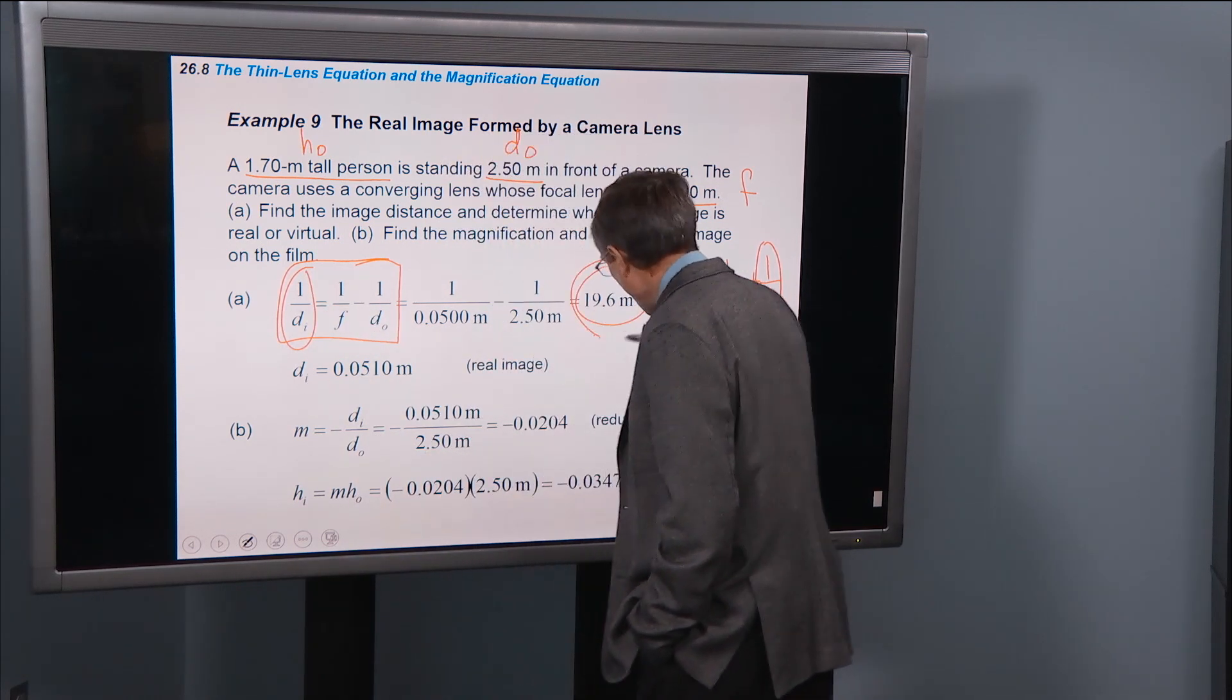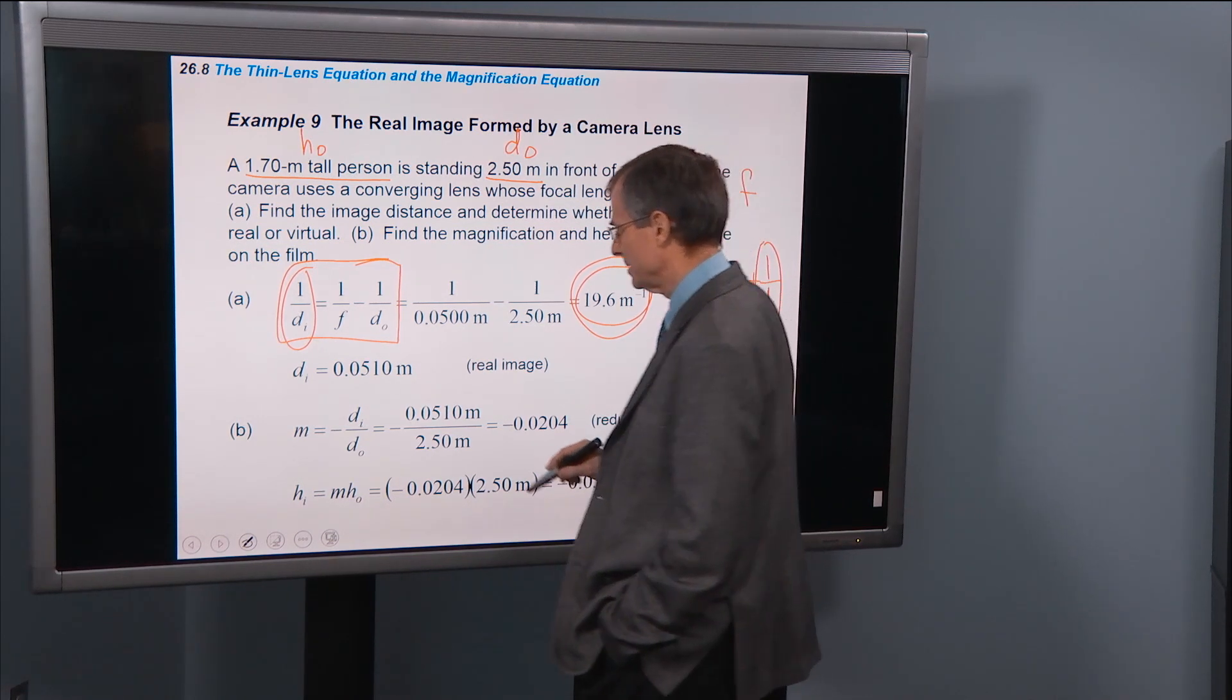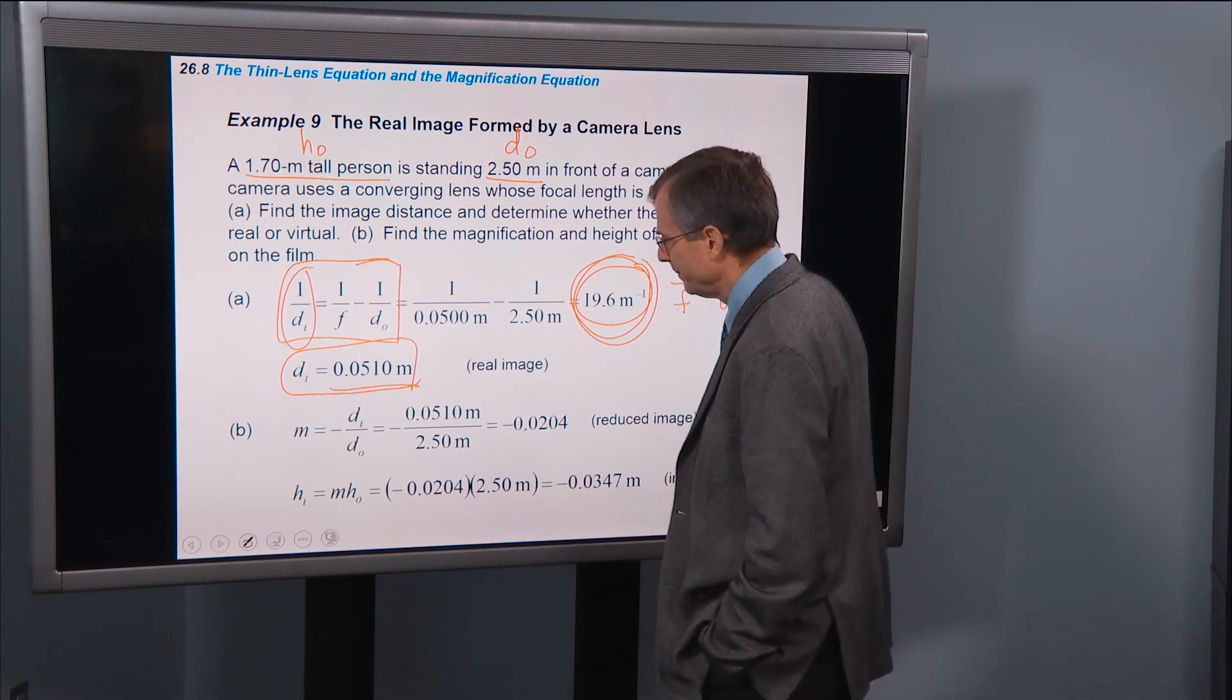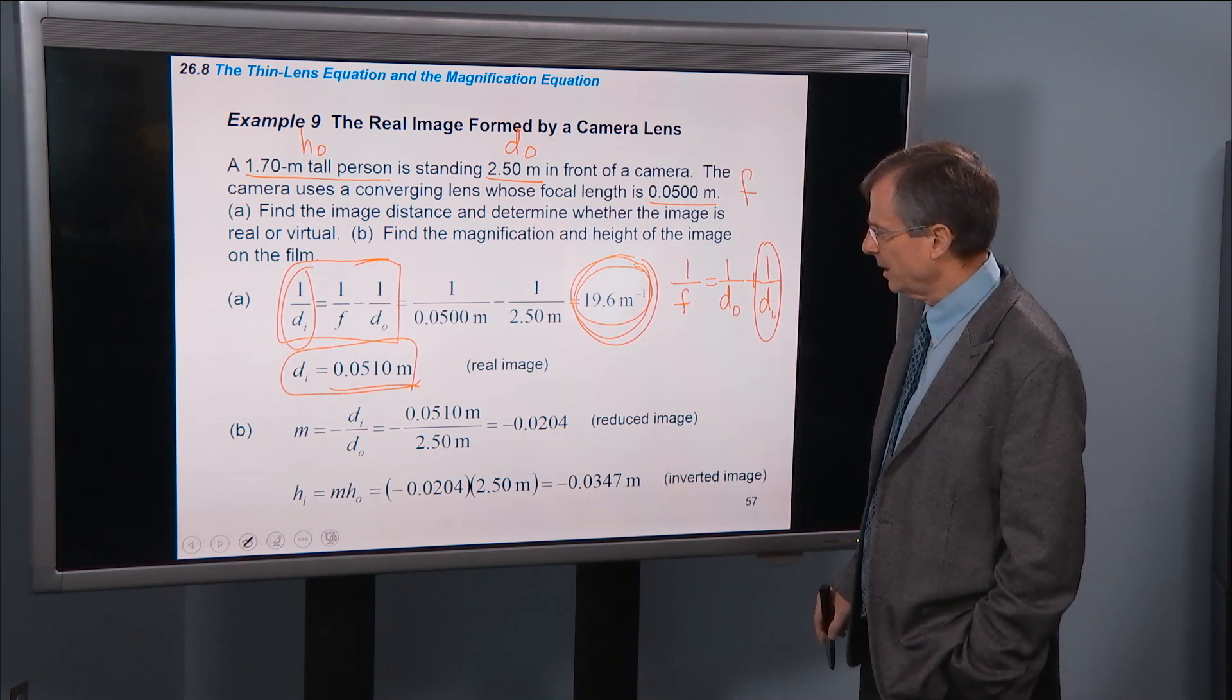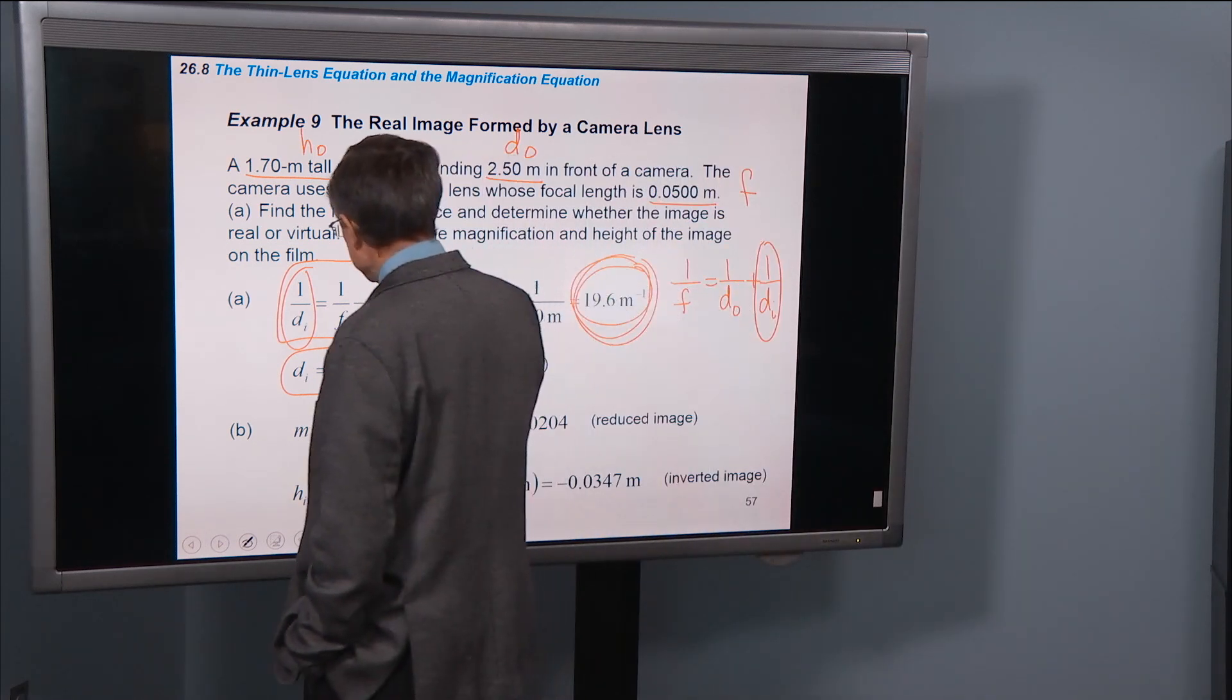So we need to take 1 over this to get the actual image distance. So this 0.05 is 1 over that number. So that gives us a real image. How do I know it's real? It's because this number is positive.